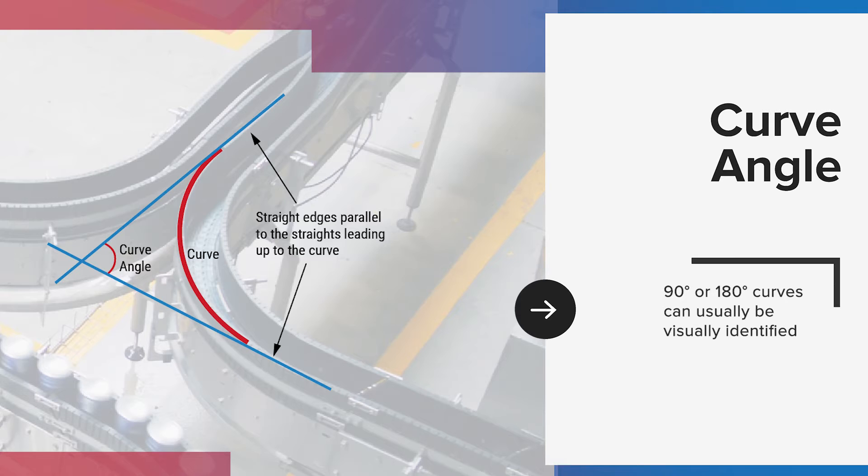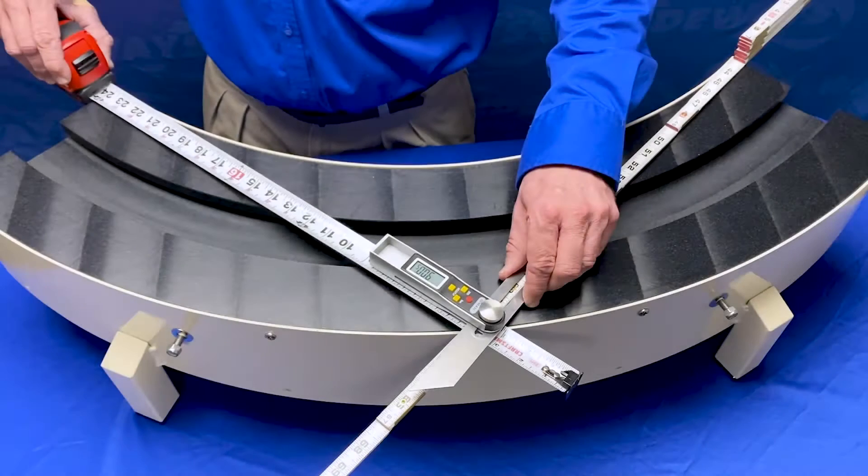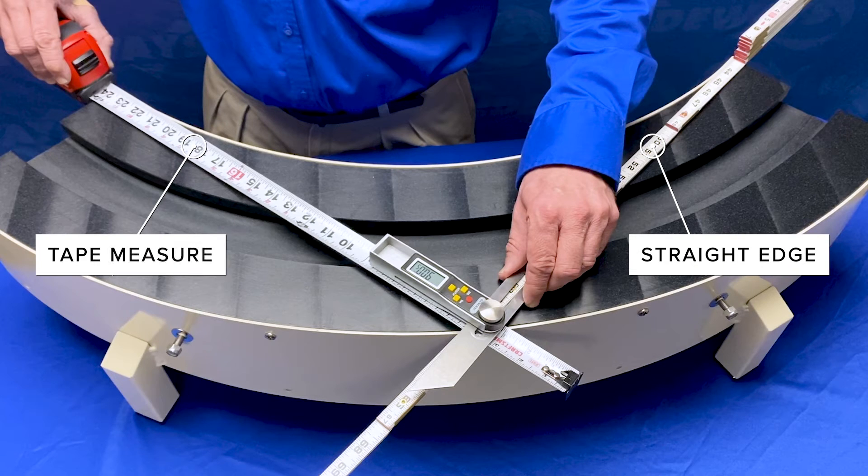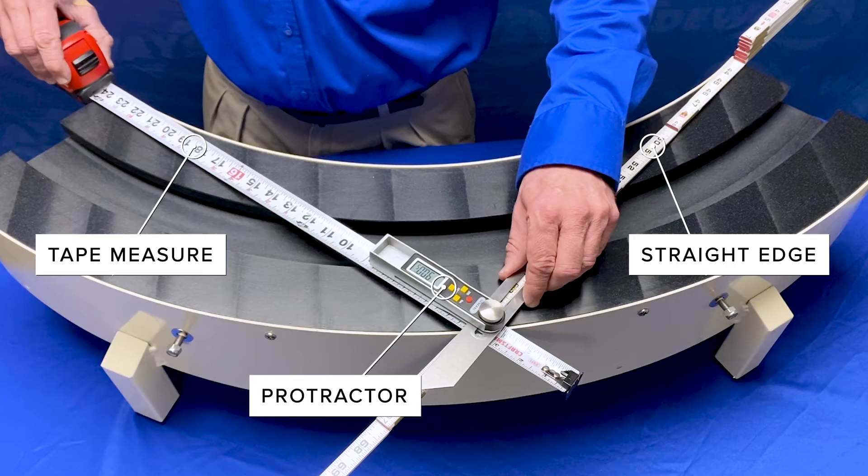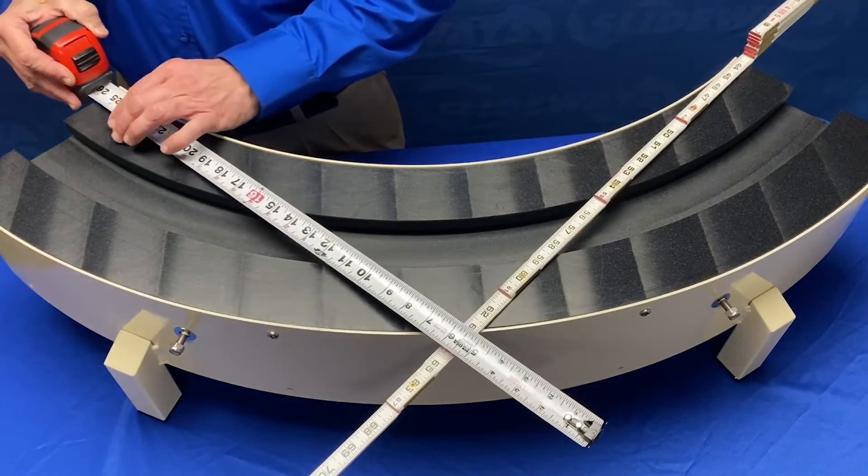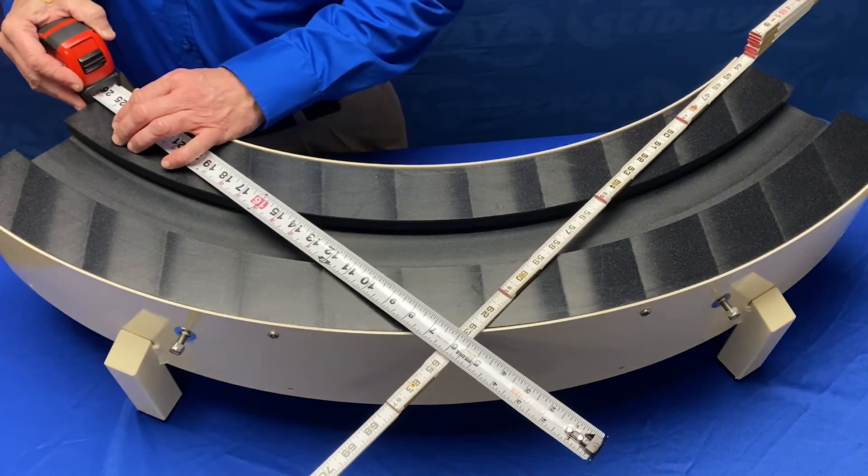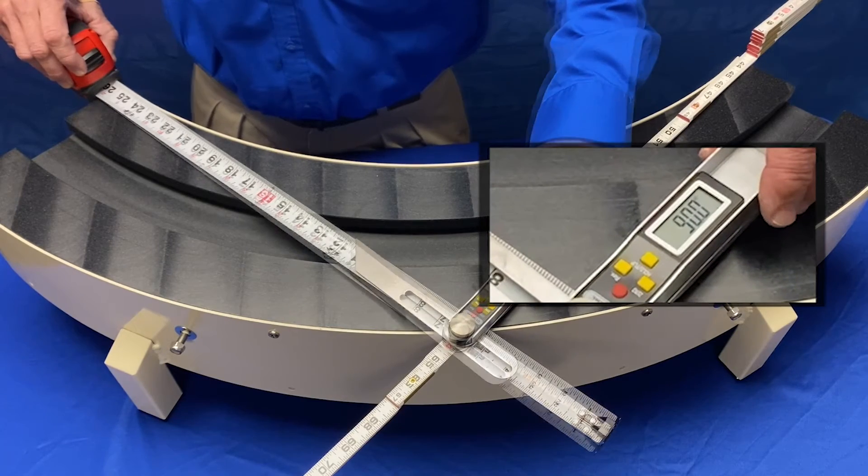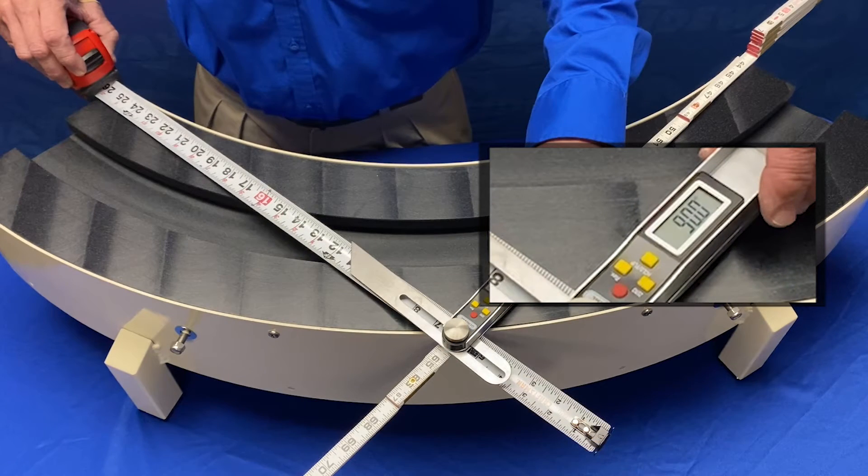Next let's measure the curve angle. Sometimes you'll be able to visually identify a curve as 90 or 180 degrees, but other times you'll have to measure the angle. To measure the curve angle you'll need two straight edges or tape measures and a protractor. Lay down the two straight edges parallel to the straights leading up to the curve. Measure the angle where the straight edges intersect with a protractor. This is the curve angle.